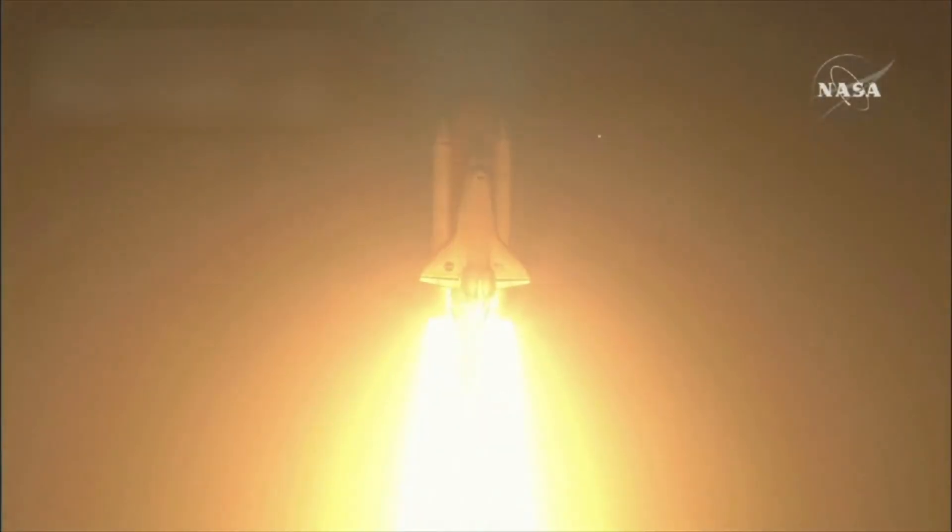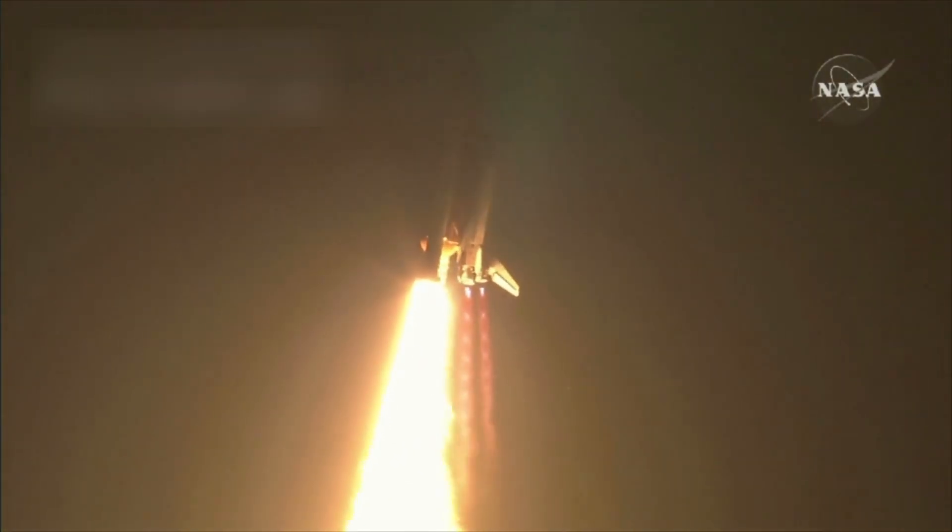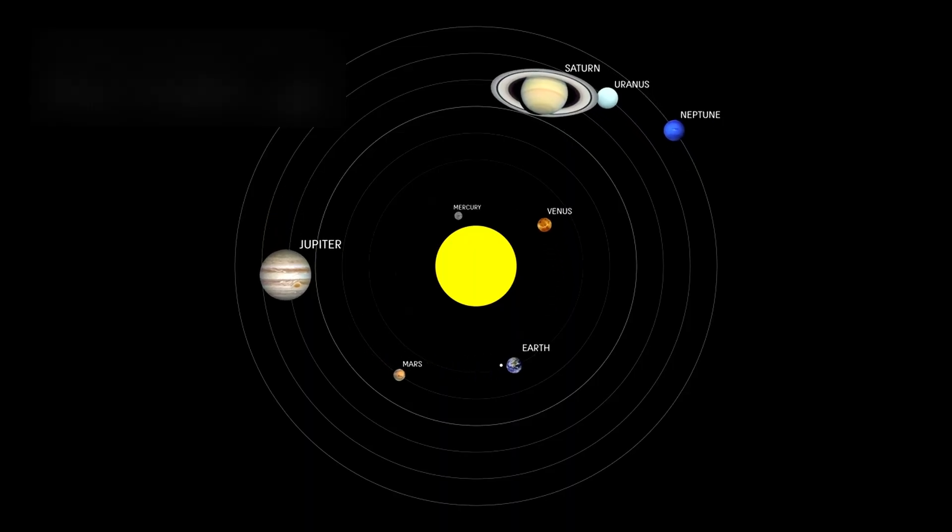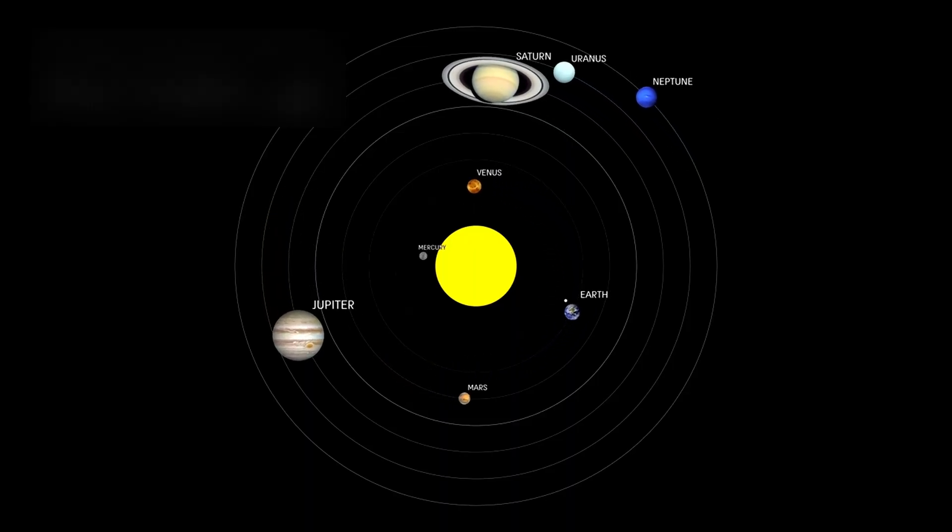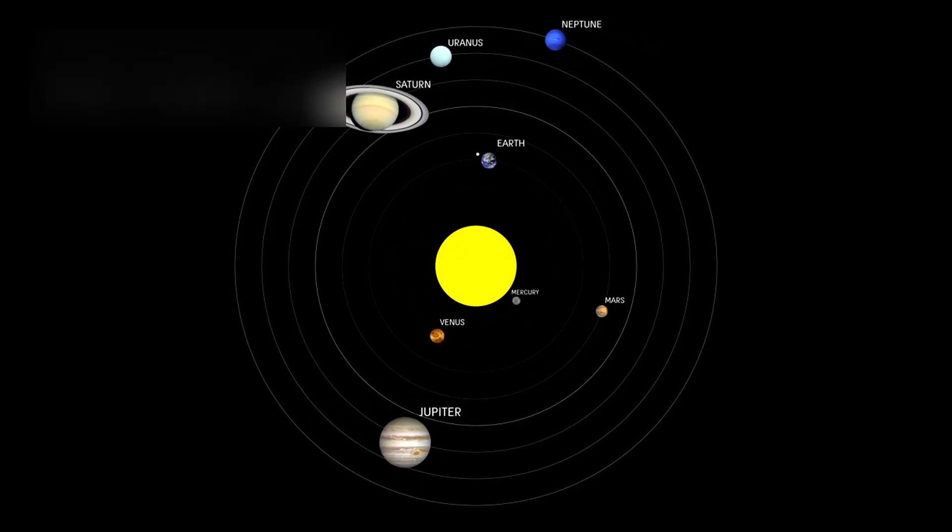That planet, called K-218b, is unlike anything in our solar system, yet strangely familiar. About eight and a half times the mass of Earth, it orbits within its star's habitable zone, the region where temperatures might allow liquid water, the cradle of life as we know it.